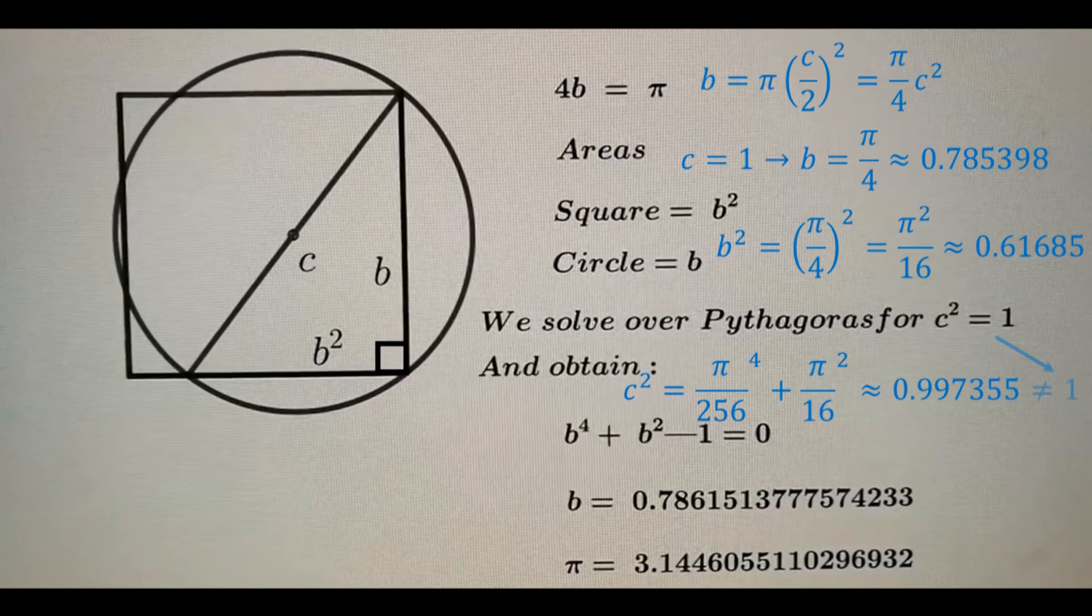Since this value is not equal to the given value of c, which is 1, then sides B and B squared don't belong to a right triangle. Not together, anyway.